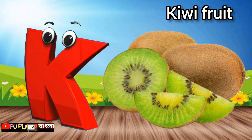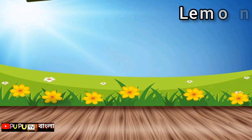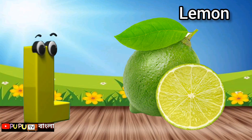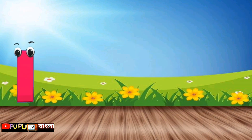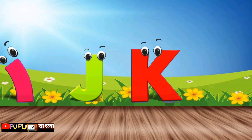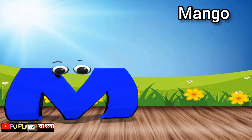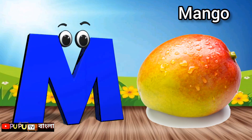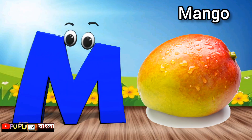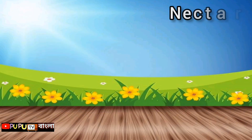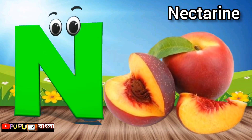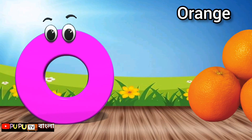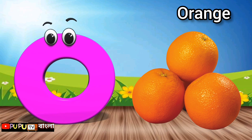L is for Lemon, Lemon. M is for Mango, Mango. N is for Nectarine, Nectarine. O is for Orange.